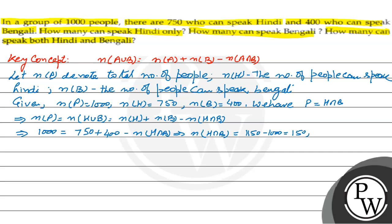These are the people who can speak both Hindi and Bengali. So 150 people can speak both Hindi and Bengali. This is one answer to the question.